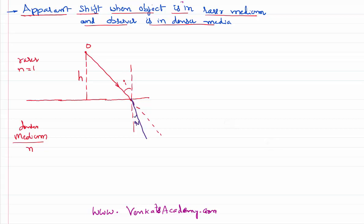The eye is receiving the light rays in a specific direction. How does the eye perceive the object? It will just extend the light rays back, so the object is not seen at O but at O dash — at a different apparent height h dash from the boundary separating the two media.